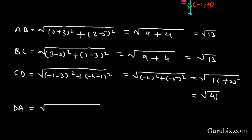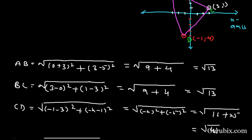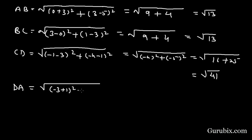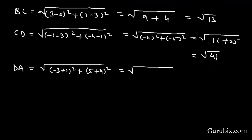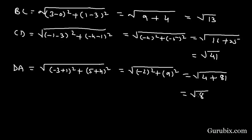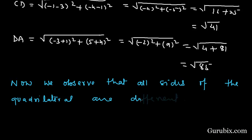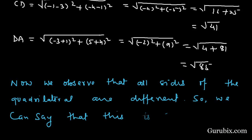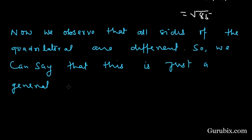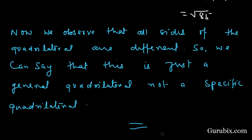Now we shall find DA: DA = √(((-3) - (-1))² + (5 - (-4))²) = √((-2)² + 9²) = √(4 + 81) = √85. We observe that all the sides of the quadrilateral are different, so we can say that this is just a general quadrilateral, not a specific quadrilateral. This is the solution of the question. Thank you.